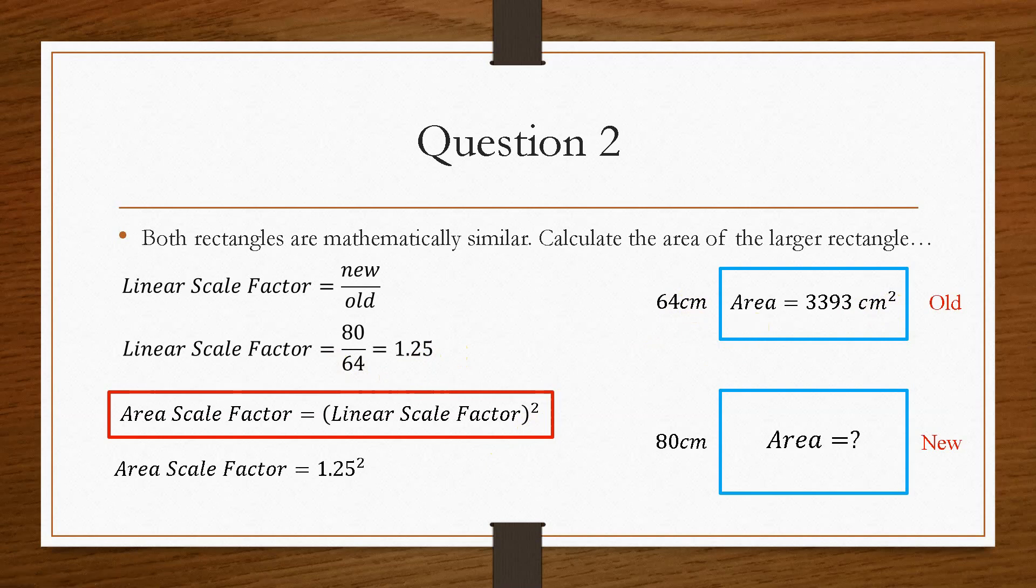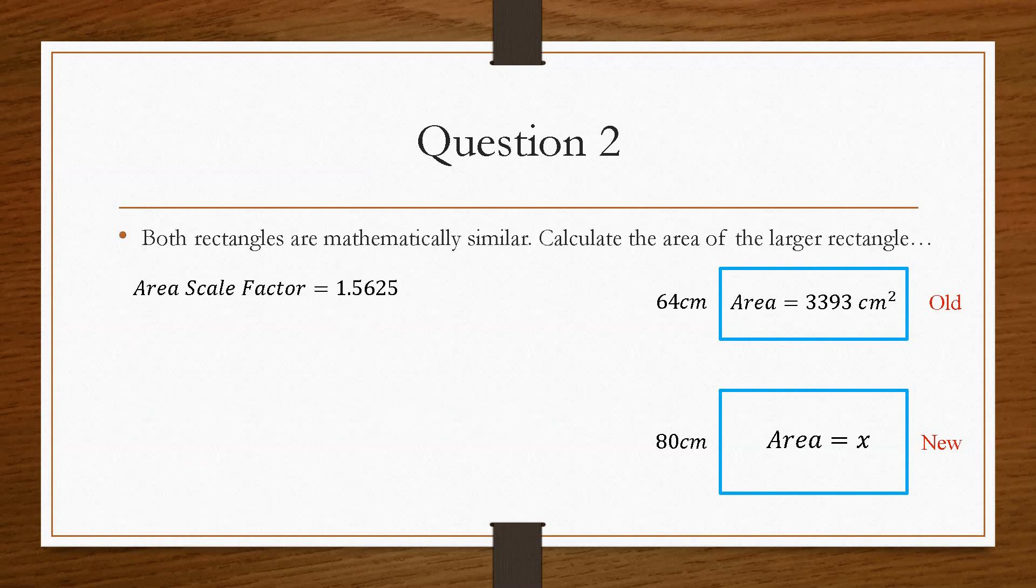So we take the area scale factor, and that will become 1.25 squared, which will give us 1.5625. That is our area scale factor. And then the process is exactly the same to find the area x. It just becomes the area scale factor multiplied by the old area. And in this case, the old area is 3393. We'll times that by 1.5625, and that will give us an area rounded up to 5,302 centimetres squared. And that's how you would go about solving a similar area question.